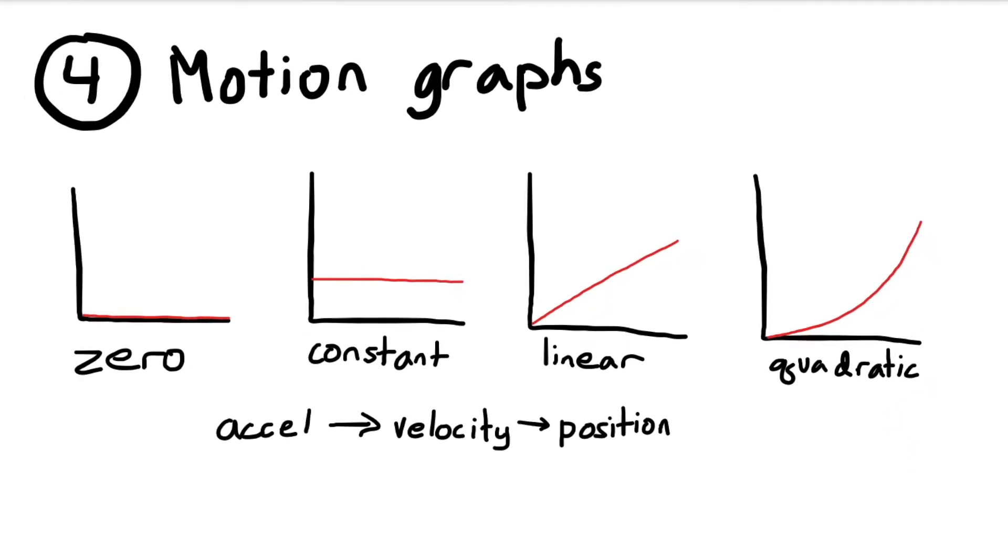Our fourth common error has to do with motion graphs. Now with motion graphs, relating one to the next can be difficult, but you just have to remember the order of zero to constant to linear to quadratic. And this goes from acceleration to velocity to position. So if your acceleration is zero, then your velocity will be constant and your position will be linear. Or if your acceleration is constant, then your velocity will be linear and your position will be quadratic.